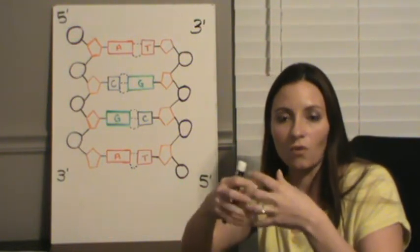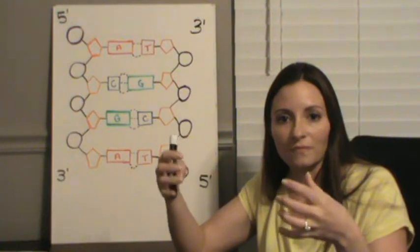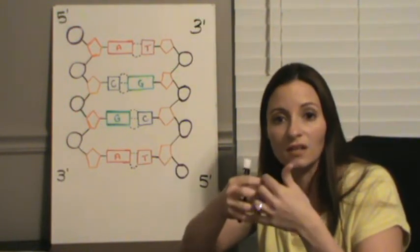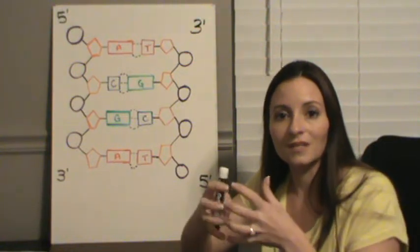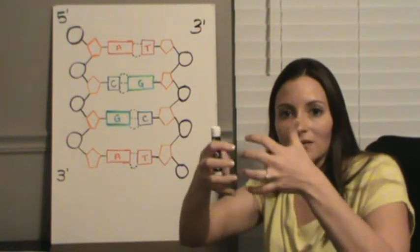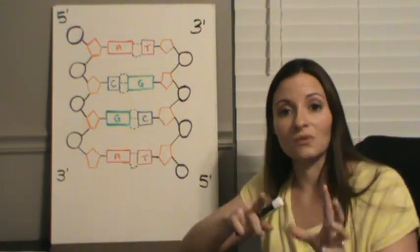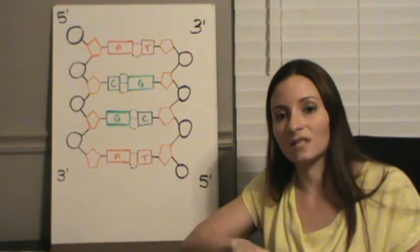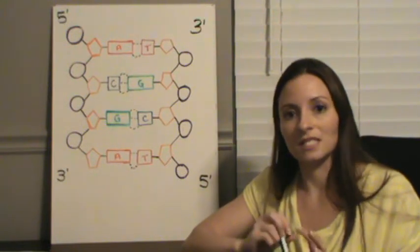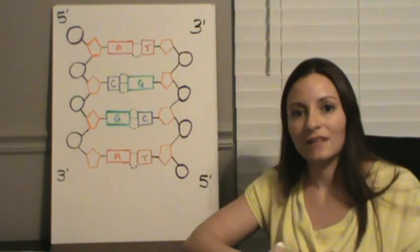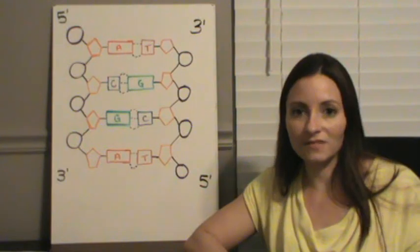It's a very strong bond that holds it together, but not quite as strong as the covalent bond. So it keeps that together, but then it allows it to break apart, and you're going to see why when we start talking about DNA replication and protein synthesis, why those middle sections need to be able to break apart. So this was the structure of DNA.